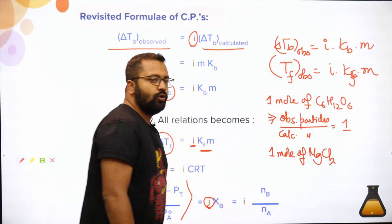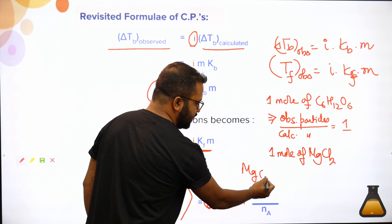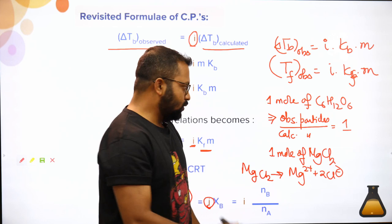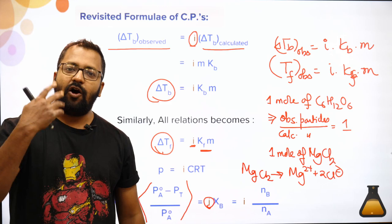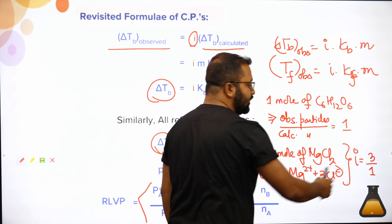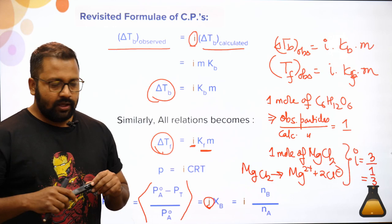However, if I take one mole of magnesium chloride (MgCl₂), and it completely dissociates: MgCl₂ → Mg²⁺ + 2Cl⁻, that gives three particles. You take one mole of substance but effectively three particles are produced, so i = 3/1 = 3. Three is what is observed, one is what was taken.